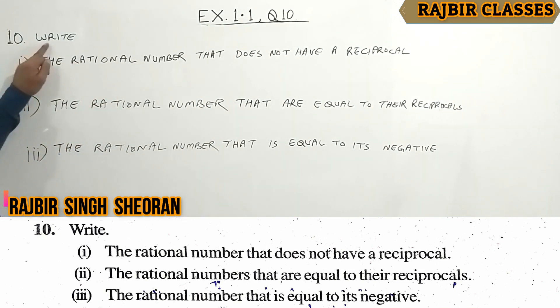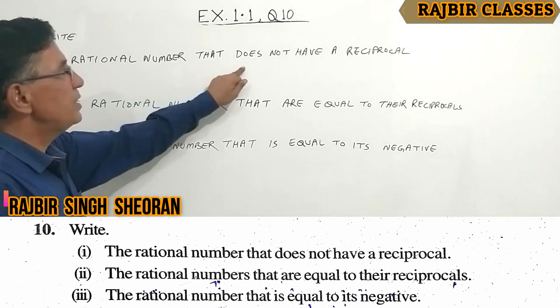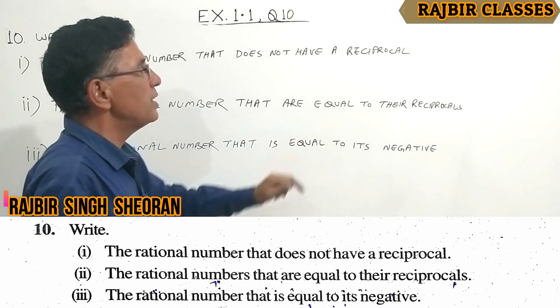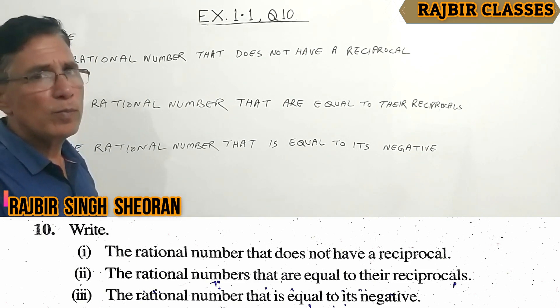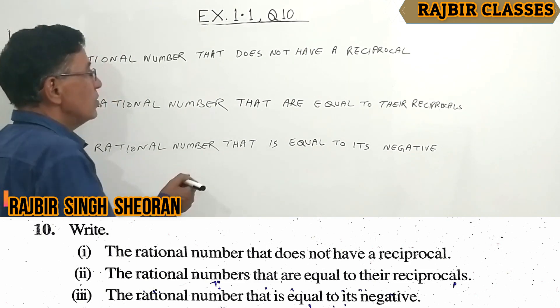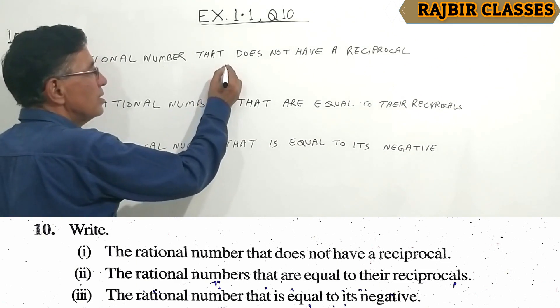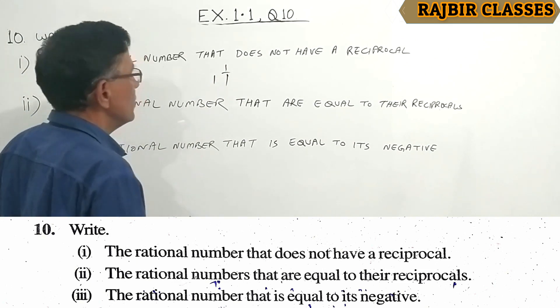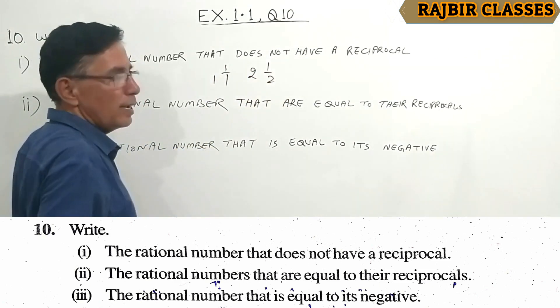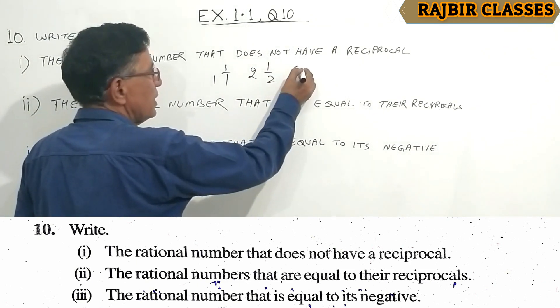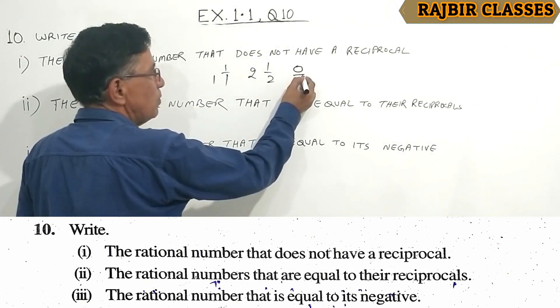Write the rational number that does not have a reciprocal. If we talk about 1, its reciprocal is 1 by 1. For 2, it's 1 by 2. But if we talk about 0, which is 0 by 1,